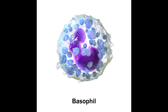What are basophils? Basophils are white blood cells that account for less than 1% of the white blood cell count. These cells are known as basophils because they readily stain purple with basic dye, and this is due to their dense basophilic granules.